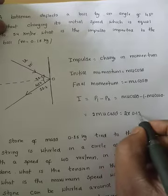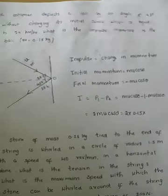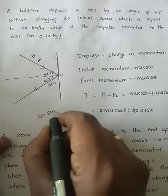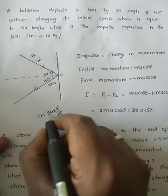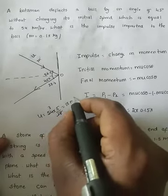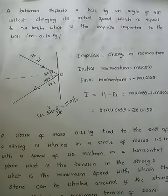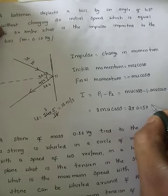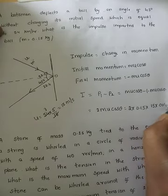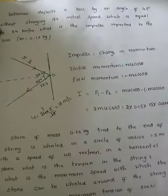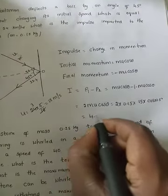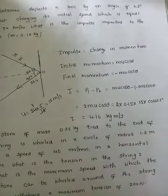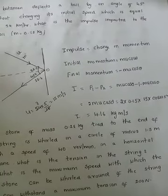2 times mass of the ball, which is 0.15 kg. We convert speed from km/h to m/s: 54 × 5/18 = 15 m/s. So the calculation is 2 × 0.15 × 15 × cos 22.5°. Substituting all values, the impulse imparted to the ball is 4.16 kg·m/s.